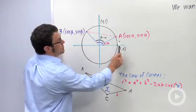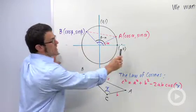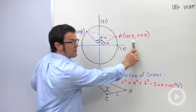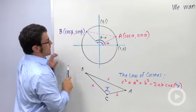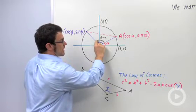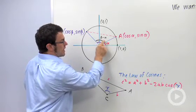This is the unit circle, and I have two points A and B. The coordinates of point A are cosine alpha, sine alpha. The coordinates of point B are cosine beta, sine beta. I'm interested in finding a formula for the cosine of this angle here, beta minus alpha.